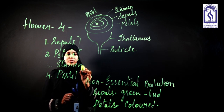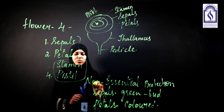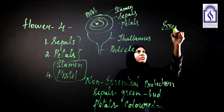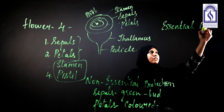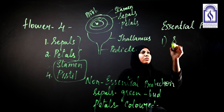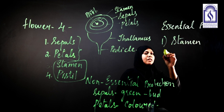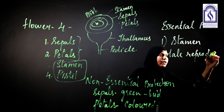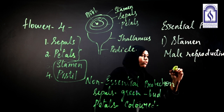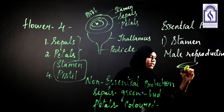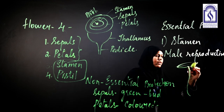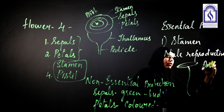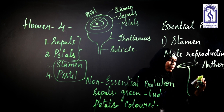Now, coming to the essential parts of the flower — the stamen and pistil. These are called the essential parts of the flower as they are taking part in the process of reproduction, or the formation of fruit. The stamen is the main reproductive part of a flower. It consists of two parts: the tip, known as the anther, and the stalk, known as the filament.